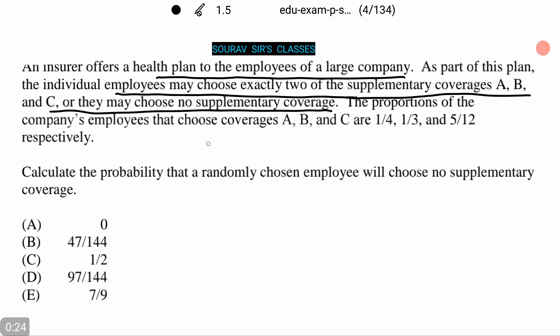The proportions of the company's employees that choose A, B, and C are 1/4, 1/3, and 5/12 respectively. Now we need to calculate the probability that a randomly chosen employee will choose no supplementary coverage.